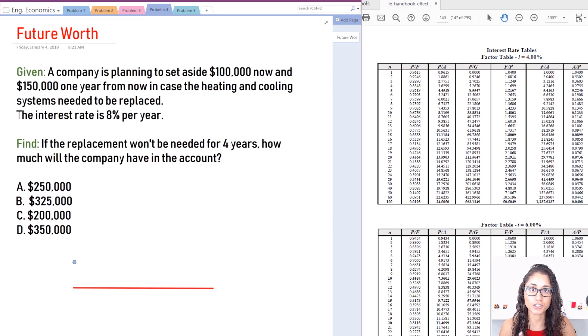So let's say four years from now they didn't need to replace their heating and cooling system, so how much will the company have in their account from those two deposits? Okay, so the first thing we're going to do is the cash flow diagram, just like we did previously. So let's do cash flow diagram.